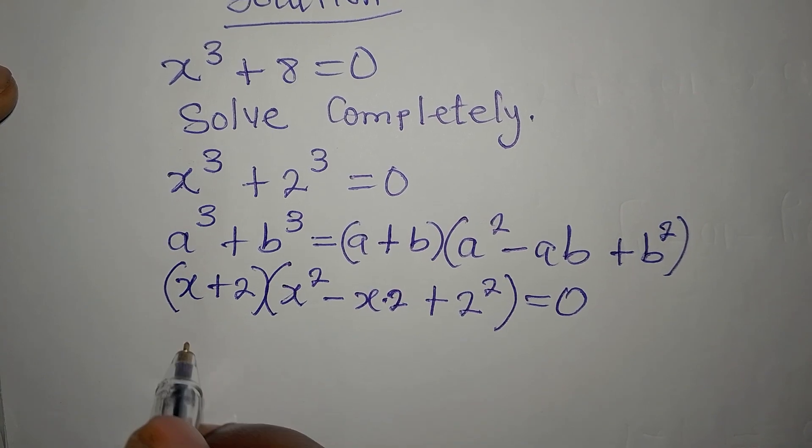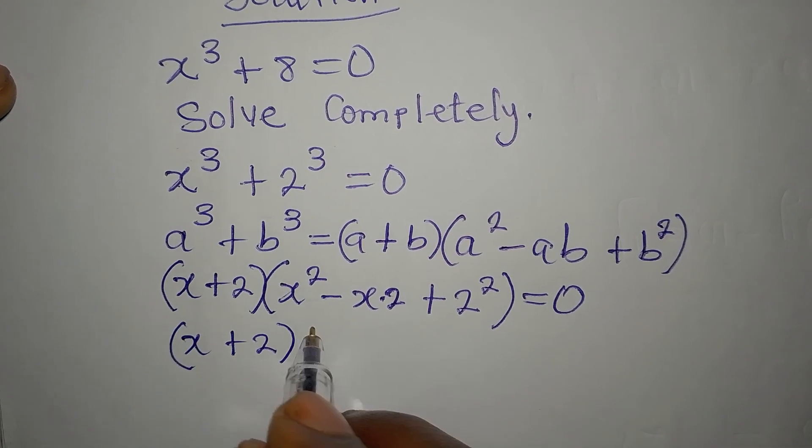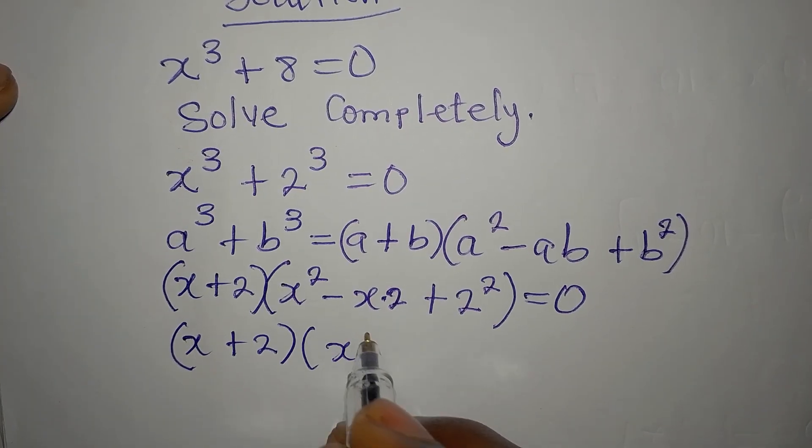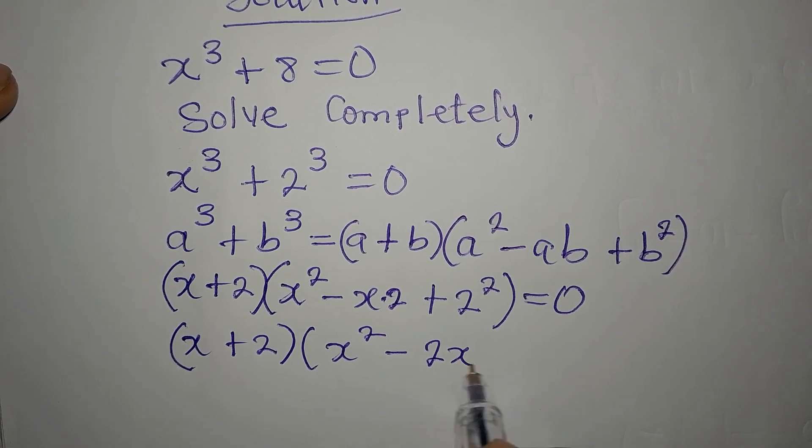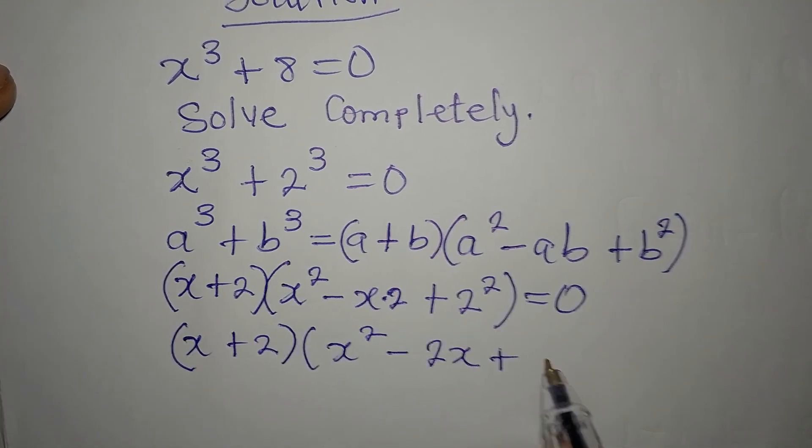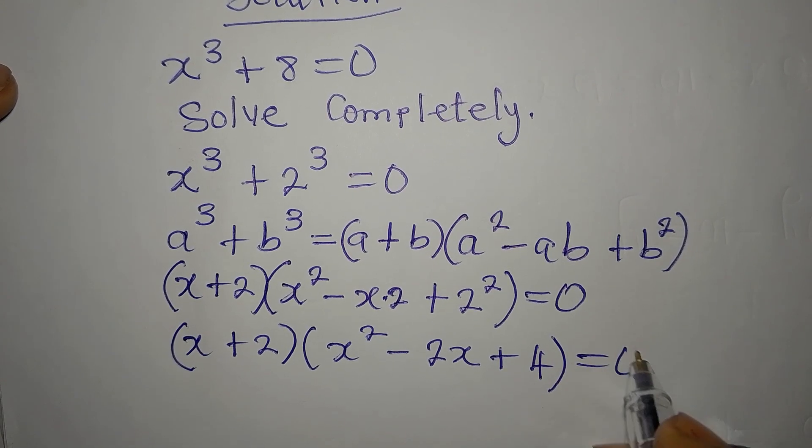Then from here, we have our x plus 2 already. Then here, we have x squared minus x times 2 is 2x. Then plus 2 squared, that is 4. Then we equate to 0.